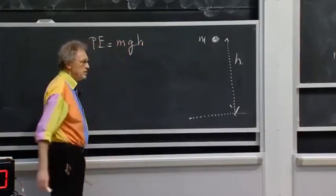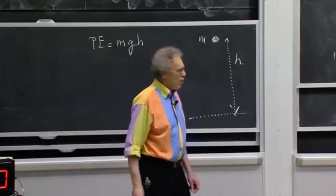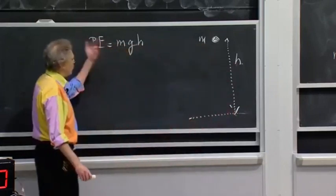And that potential energy is mgh. You already know what g is. Well, h is this distance in meters. So when the object is here on the floor, h is zero, so there is no potential energy.